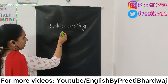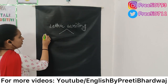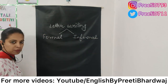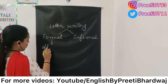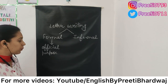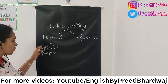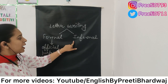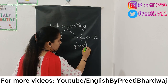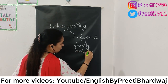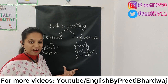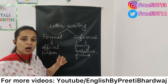Letter writing is of two types. The first type is formal and the second type is informal. Formal letter writing is done for official purposes. For example, if you are writing a letter to your boss, a letter to any manager, or to the editor of any newspaper, we will write a formal letter. Informal letters are written when we write a letter to any of our family members, relatives, or friends. So these are the two types of letter.